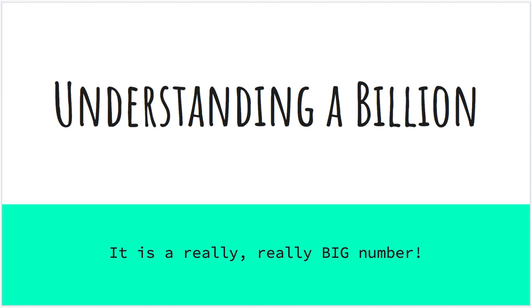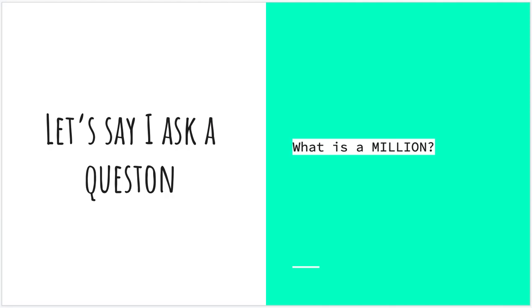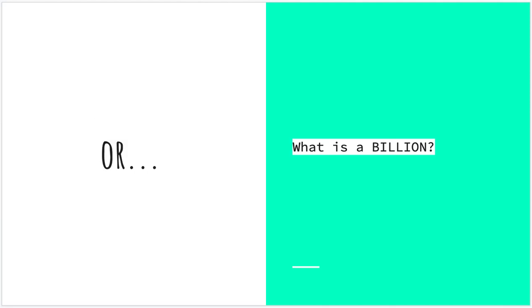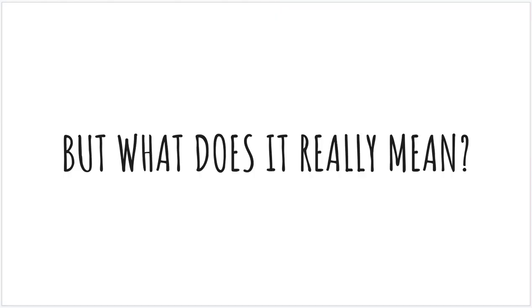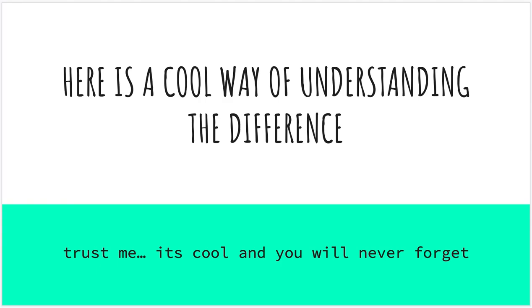I'm doing it again so that you understand. This is a video that will really make you understand the difference between a million, billion, and a trillion. So let's say I ask: what is a million, or what is a billion, or what is a trillion? Mathematically speaking, a million is six zeros, a billion is nine zeros, and a trillion is 12 zeros. But what does that really mean? How can you really understand the difference? Here's a cool way of understanding it — trust me, it's cool and you'll probably never forget it.